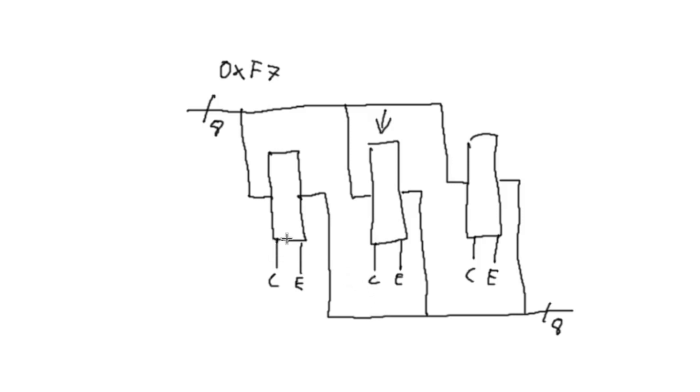And then whatever is in this register doesn't get affected. Whatever is in this register doesn't get affected. And that 0xF7 gets saved in this register right here.